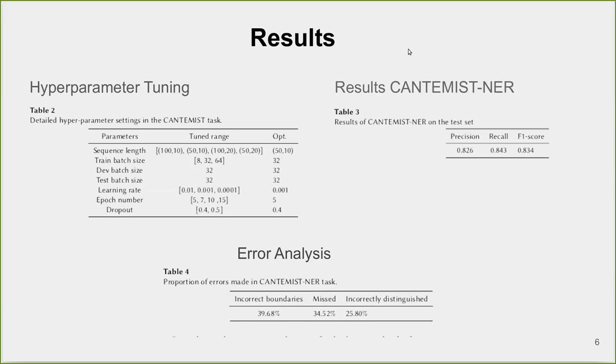Missing the tumor morphology mention: This error happens when the system does not recognize a morphology mention in the clinical text. This type of error is often caused when the model confuses terminology that in other documents refers to another medical condition but in the current document refers to tumor morphology. Incorrectly distinguishing the tumor morphology mention is the opposite case.